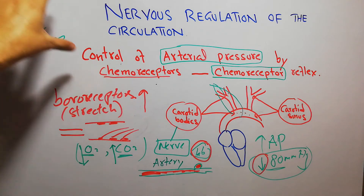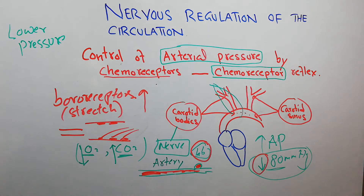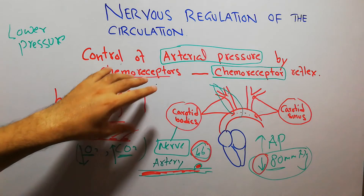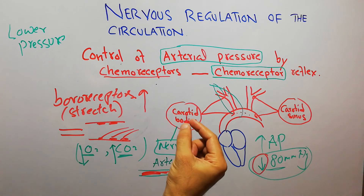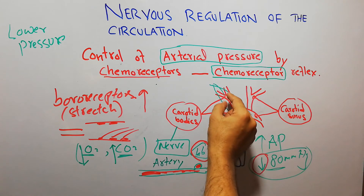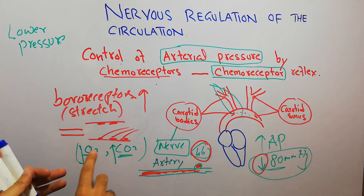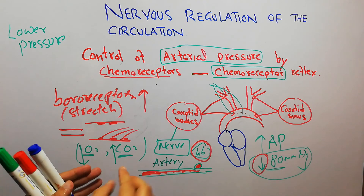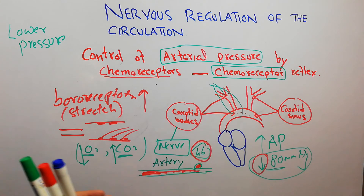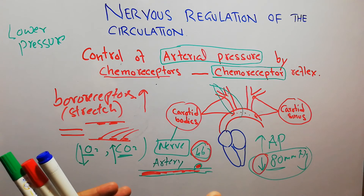To summarize this lecture: we are discussing the role of the nervous system in the regulation of circulation — the role of the brain, spinal cord, and nerves in the control of circulation and heart rate. We have discussed the baroreceptor system, and today we discussed chemoreceptors — special receptors present in carotid bodies, in the aorta, and at the bifurcation of the carotid arteries. They detect the level of oxygen and carbon dioxide in the blood, and they are specially supplied with an artery which brings blood to them so they can test these levels.